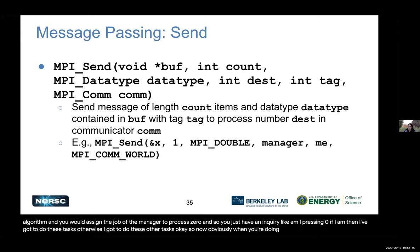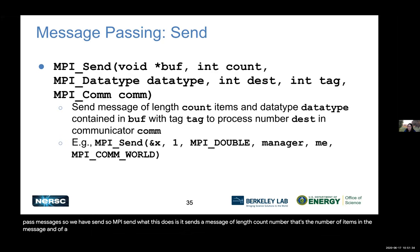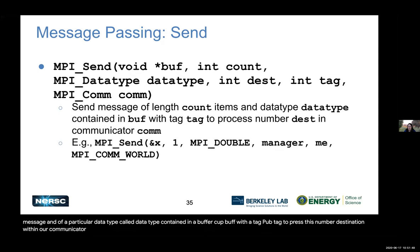When doing message passing, you need a way to pass messages. MPI_Send sends a message of length count — the number of items — of a particular data type, contained in a buffer called buff, with a tag, to process number destination, within communicator comm.